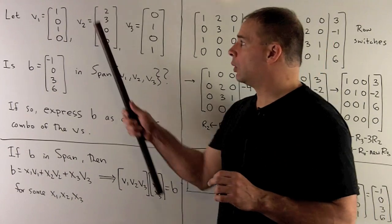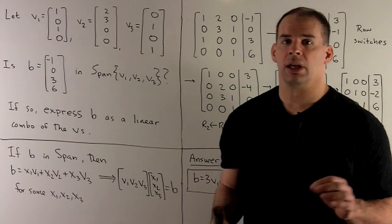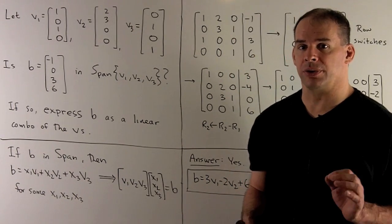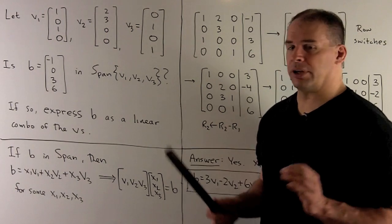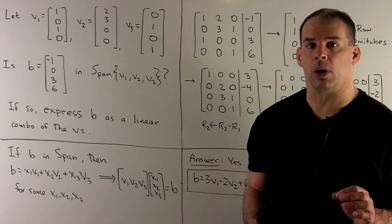Let v1 be the vector [1, 0, 1, 0]. Let v2 be the vector [2, 3, 0, 0]. Let v3 be the vector [0, 1, 0, 1].